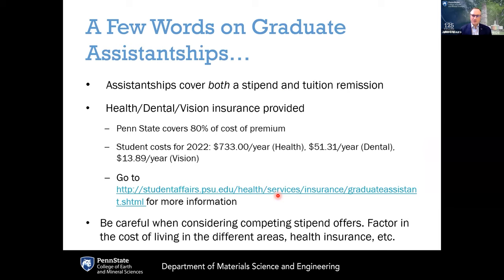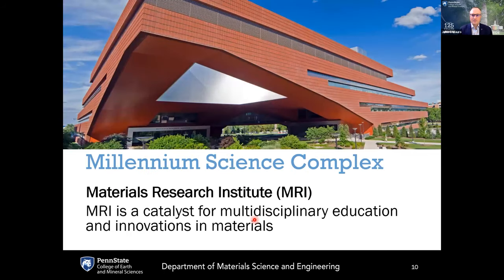Graduate assistantships cover both a stipend and tuition for your PhD. Penn State also provides very good insurance covering health, dental, and vision — Penn State covers 80% of the premium. When comparing offers from different universities, be sure to factor in the very different costs of living in different areas, because it is much more cost effective to live in an area like State College compared to Boston or Silicon Valley.